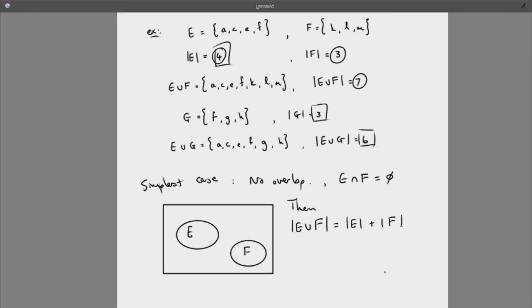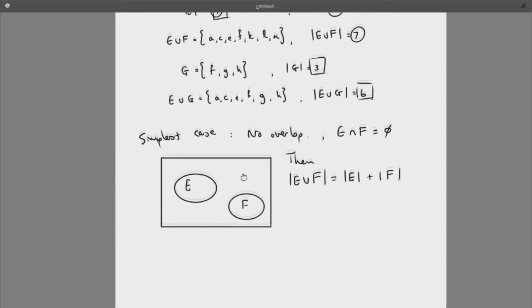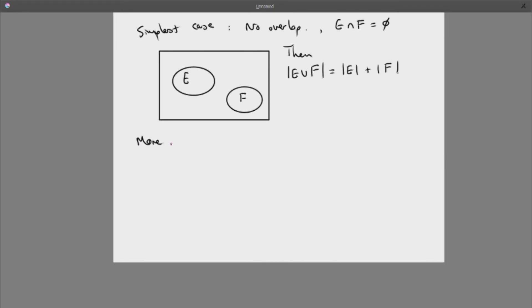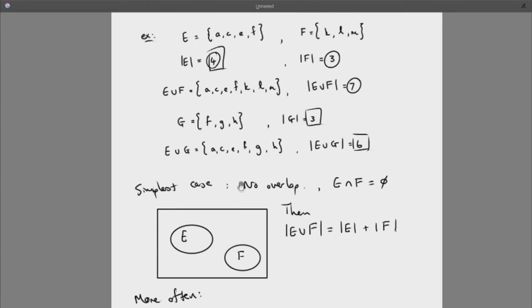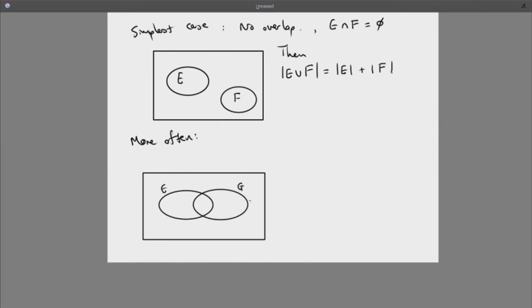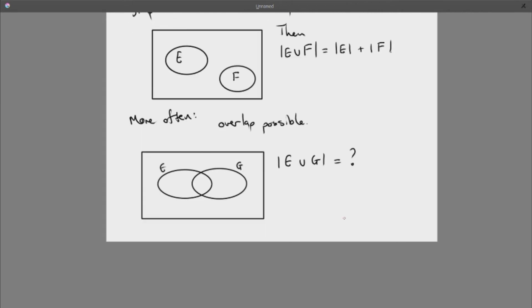But of course that case doesn't always happen. More often there is an overlap. So let's visualize the general position of two sets. E and G, they have something in common. If I don't know what the specific elements are, I have to assume there is potentially an overlap. Then the question is, what is the union without me knowing the elements at all?